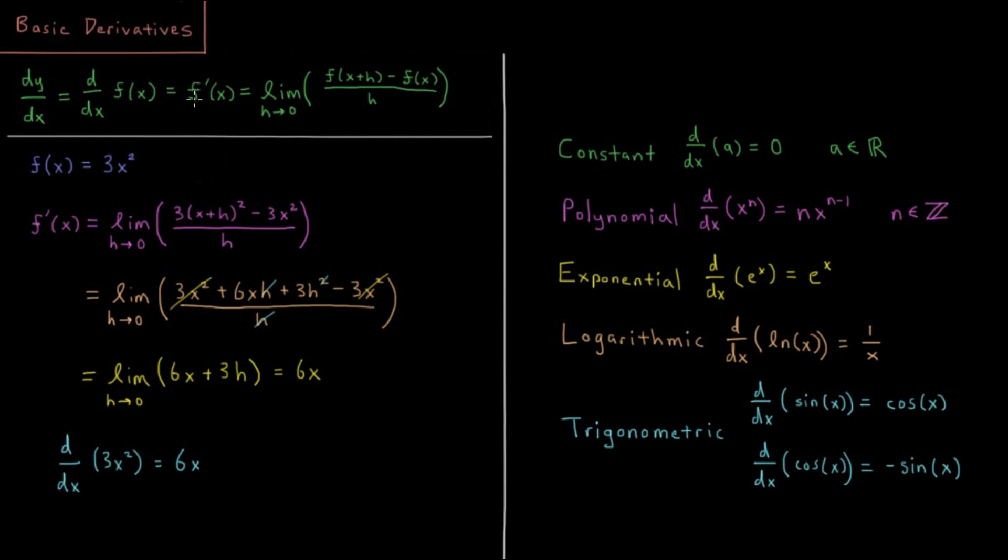could also represent as f prime, its first derivative, is equal to the limit as h goes to 0 of f of x plus h minus f of x divided by h, or it's the instantaneous rate of change of f at that value of x.